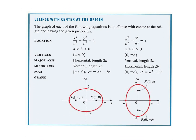If we have an ellipse with the center at the origin — that's what we're going to be focusing on here. The origin is the center point at (0, 0) on the xy plane. The graph of each of the following equations is an ellipse with a center at the origin, and they have given properties. We are looking at two different types of ellipses.